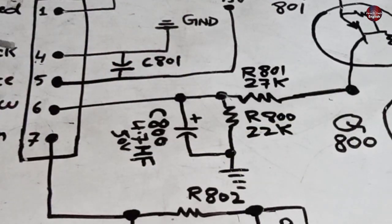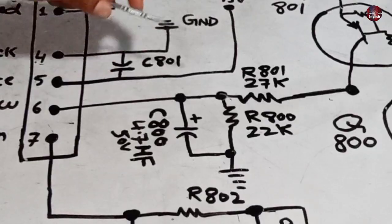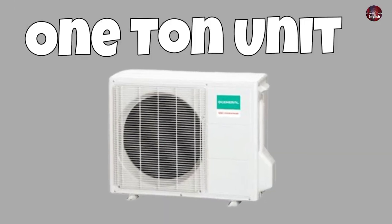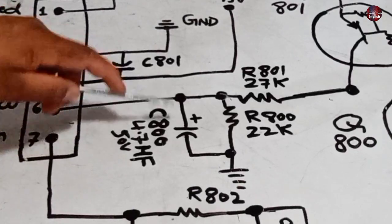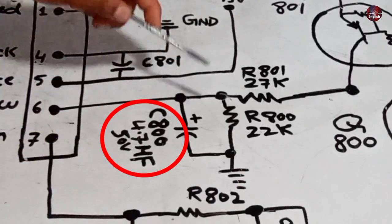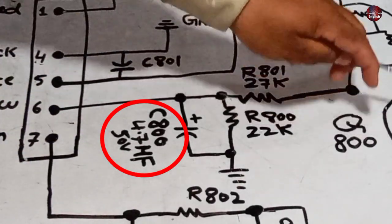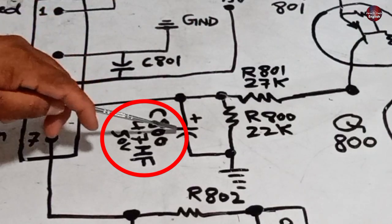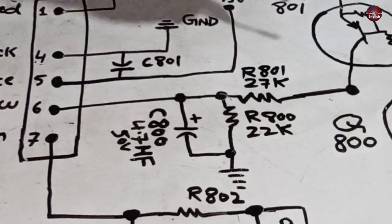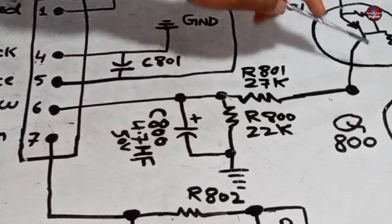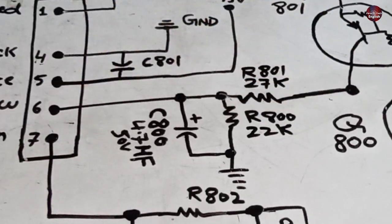In this model, they have used fewer components because this is a 1 ton mini split AC, which is why the fan circuit is designed this way. And here, the capacitor C800 of 4.7 microfarads and 50 volts is installed, and if it is short-circuited, still the fan will cause problems. Because when the operating voltages will pass through the capacitor, it will not work properly due to getting short-circuited.